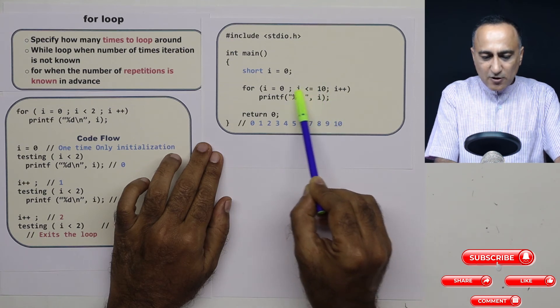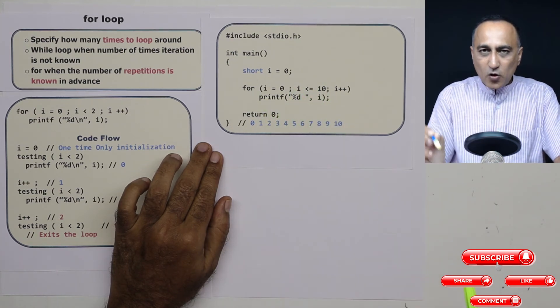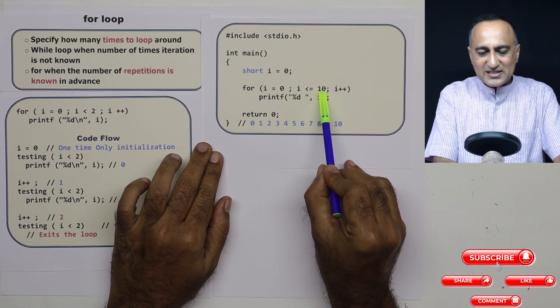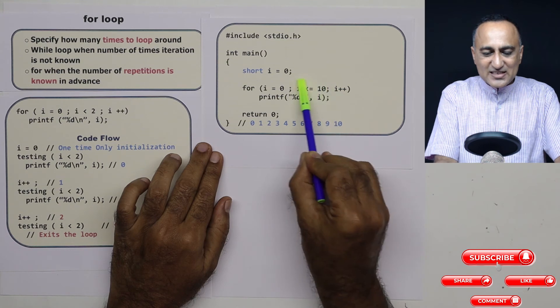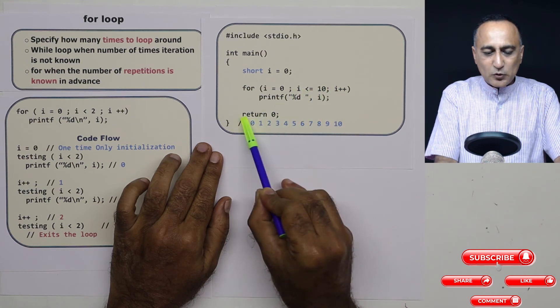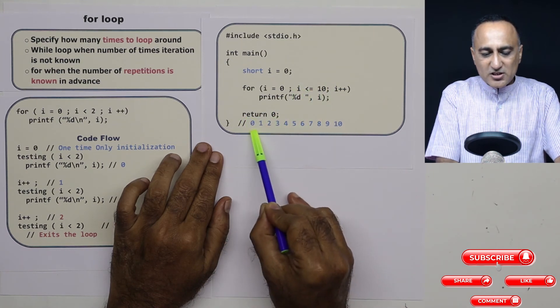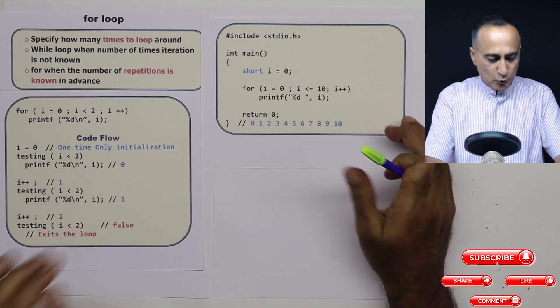This process of printing the value of i will go on again and again as long as the value of i is less than or equal to ten. The minute i becomes eleven, this condition will fail and I will come to return zero. So this is going to be the output of this particular for loop.